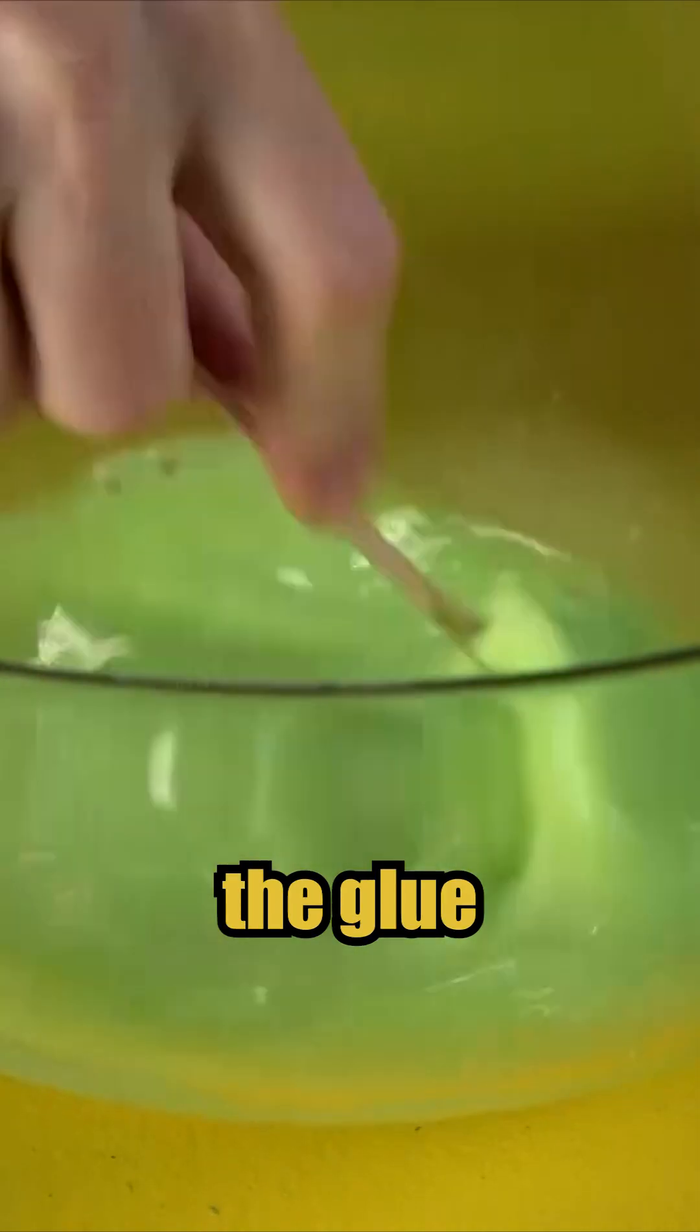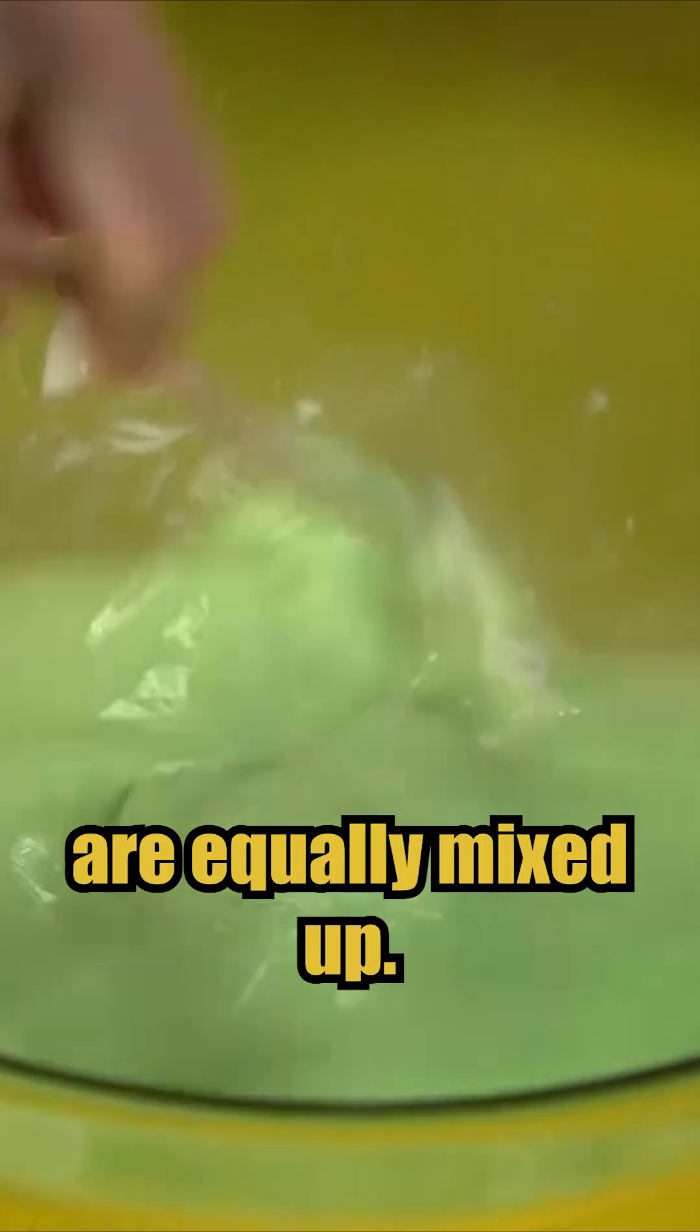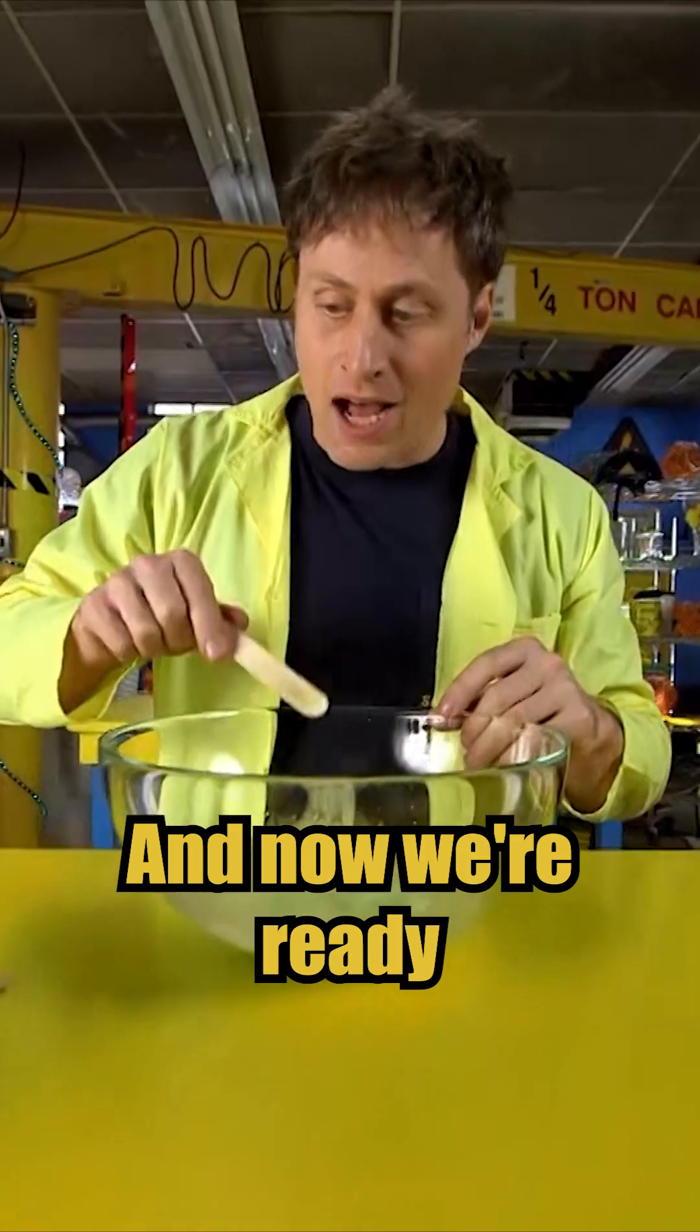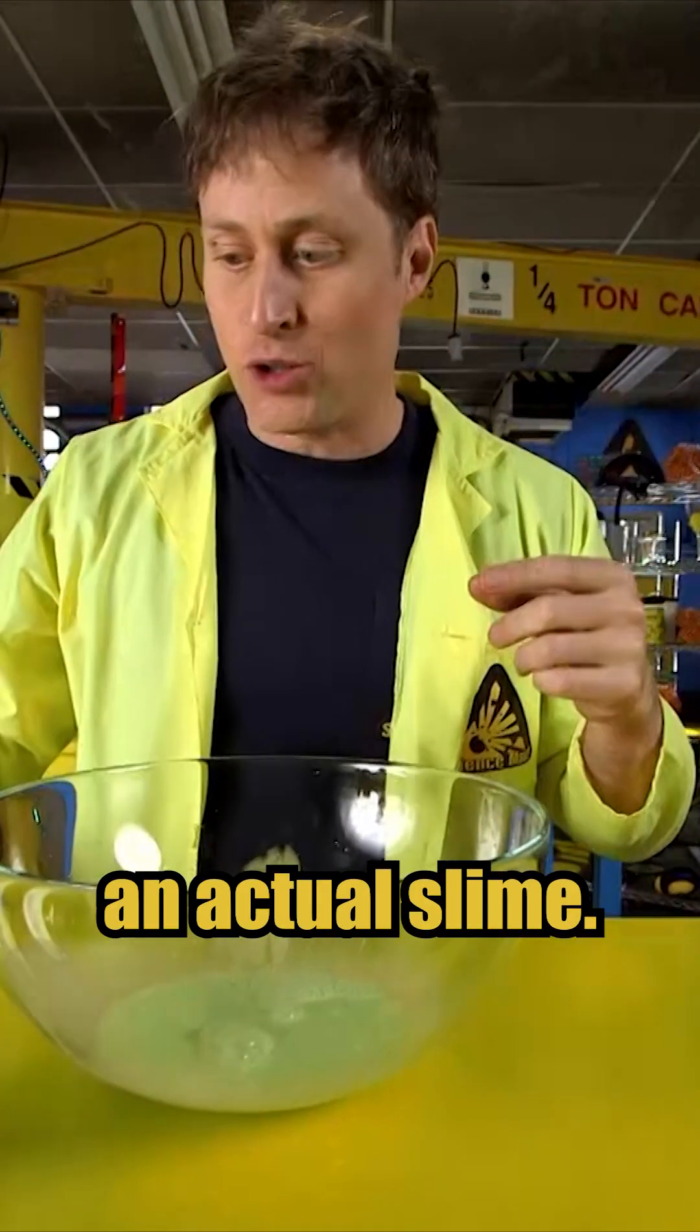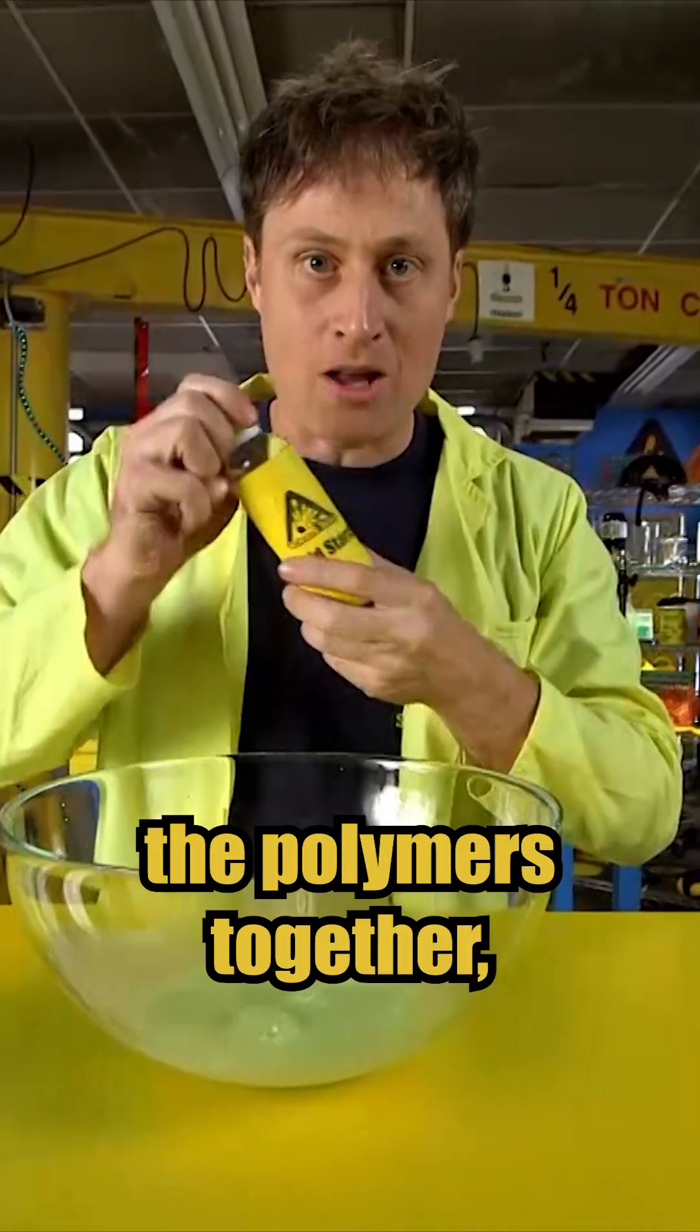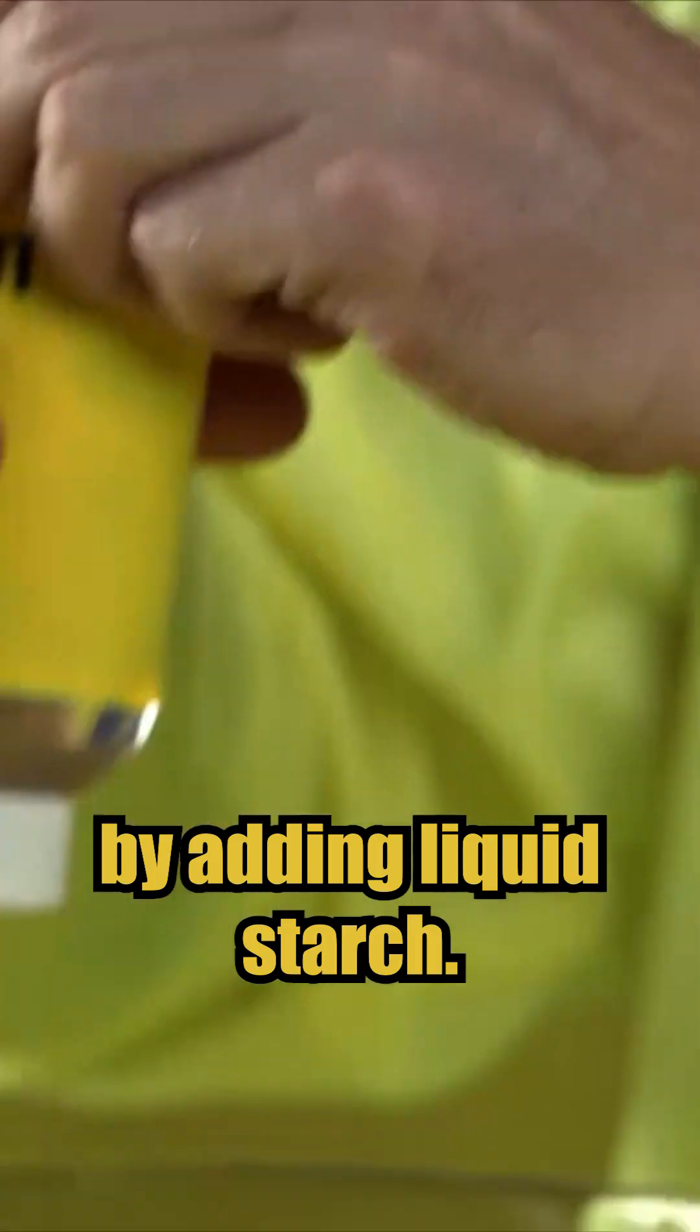That means make sure the glue and the water are equally mixed up. Good. And now we're ready to make it an actual slime by bonding the polymers together by adding liquid starch.